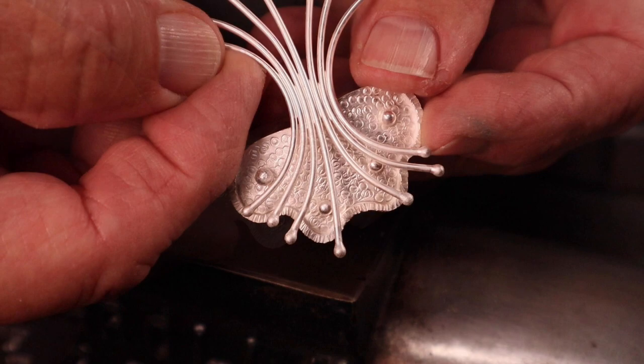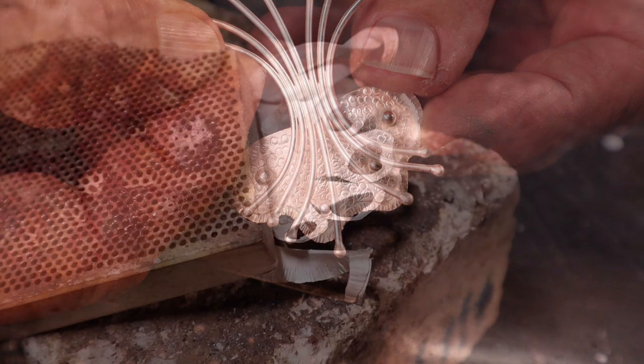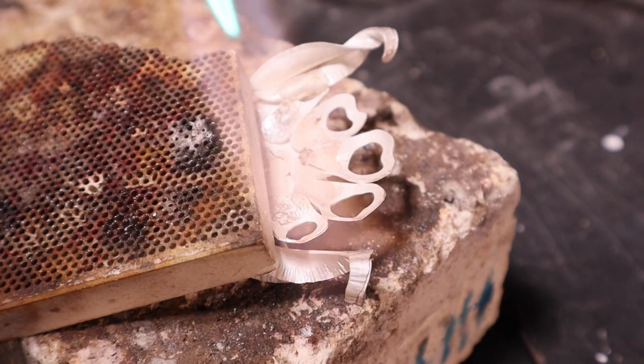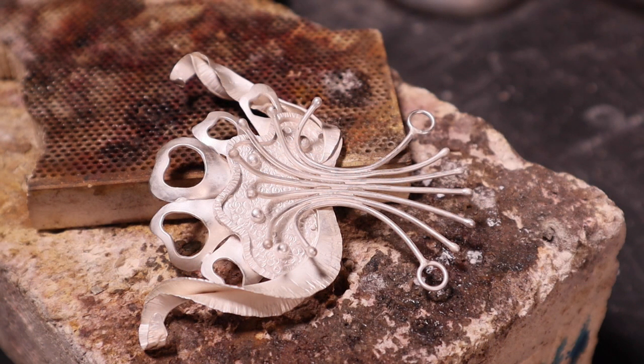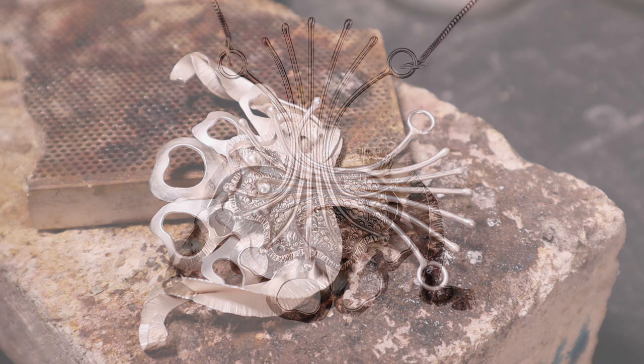The back sheet has a couple extra pieces of shot soldered onto it and then we solder the whole piece together from the back. Soldering from the back leaves us a little room for error in case we need to clean up those spots. All the spots have been cleaned up and pickled and then ready to liver sulfur and finish.